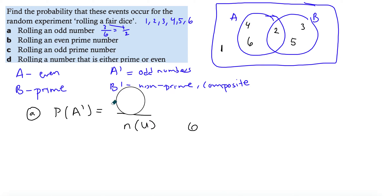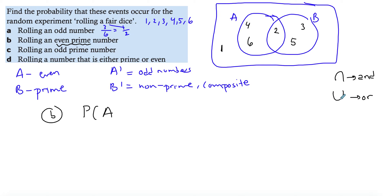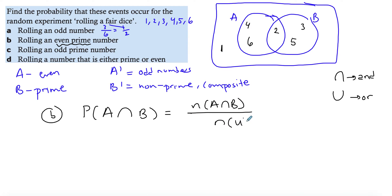For an even and prime number, I'm combining two conditions — it has to be even AND prime. The 'and' notation is the intersection. So this is the number of elements in A intersect B divided by the total of six. How many elements are in the intersection? Just one — don't write two, because two is the value inside the intersection; the count of elements there is one. So the answer is one over six.